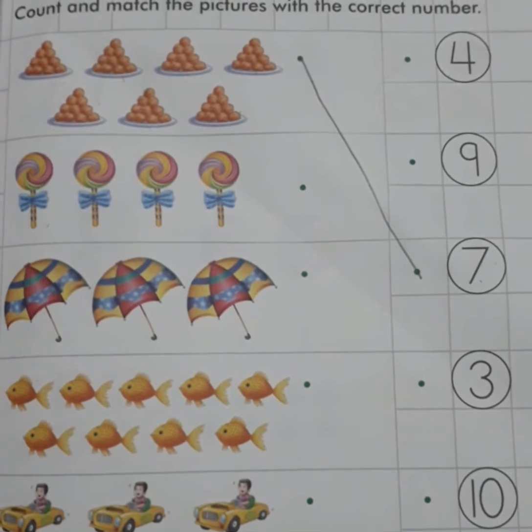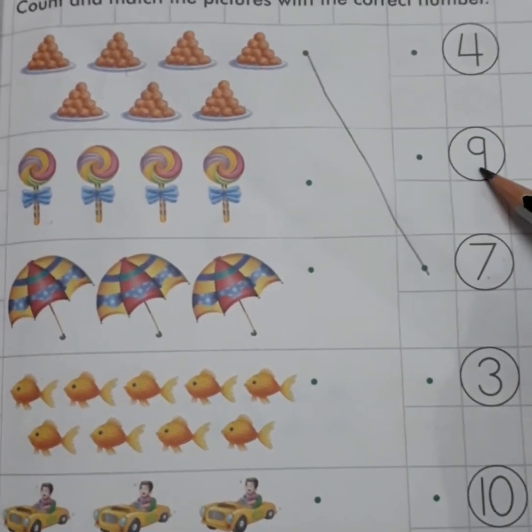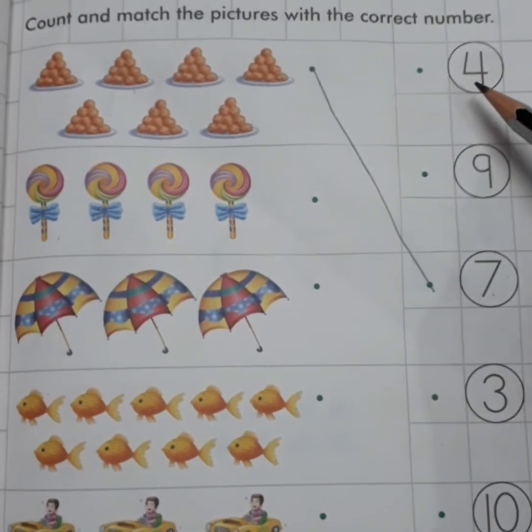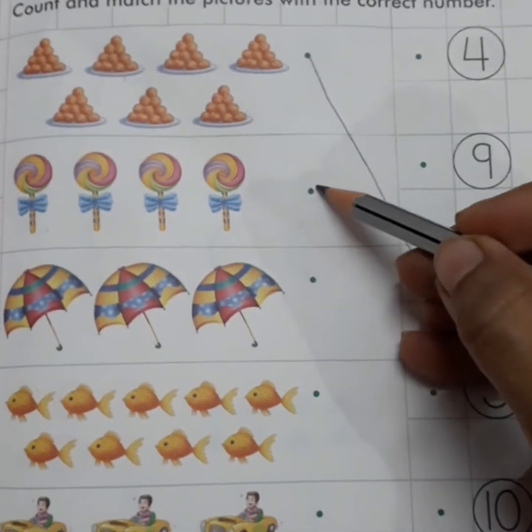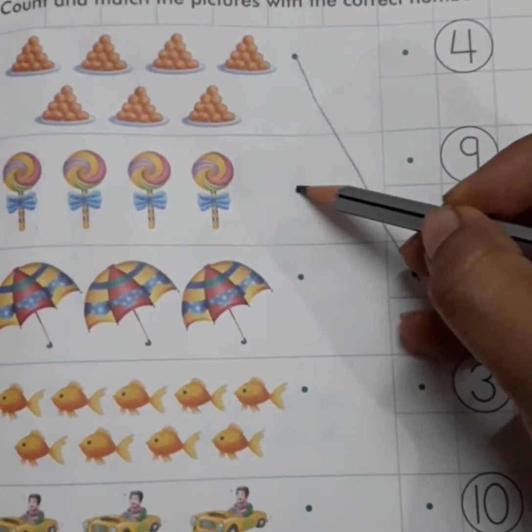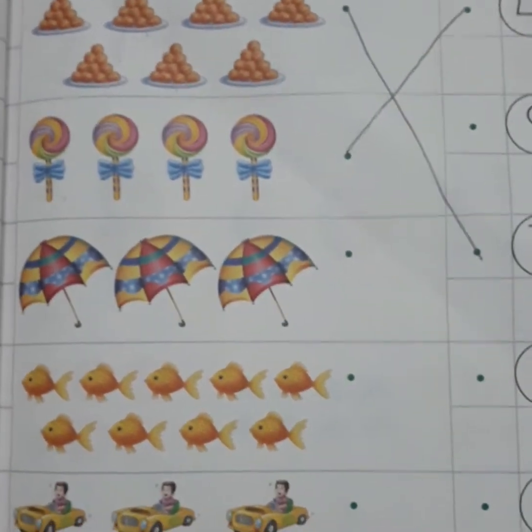Now, you will check it. Where is number four? This one. No? Yes. This is number four. Now, you will match with number four. Like this. Very good kids.